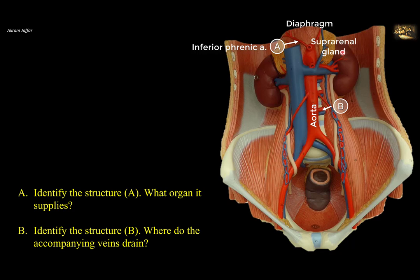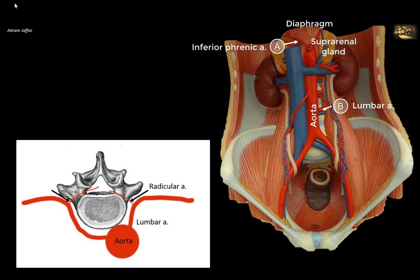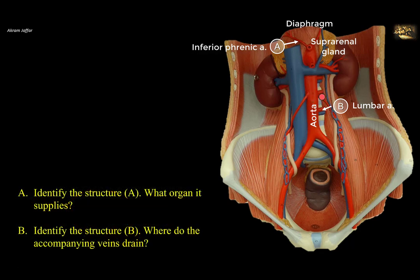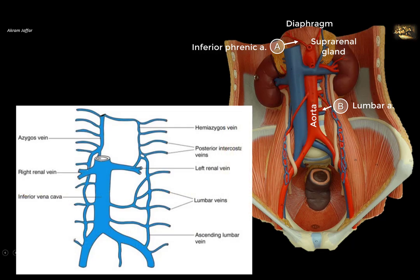Regarding structure B, this is one of the four pairs of lumbar arteries — the first one is higher up and not shown here. In addition to supplying the anterior abdominal wall, these lumbar arteries provide branches that supply the spinal cord, so they are like segmental arteries, in the same sequence as the intercostal and subcostal arteries. The accompanying lumbar veins are tributaries of the inferior vena cava. However, the first and second lumbar veins may empty into the ascending lumbar vein on either side. These ascending lumbar veins connect with the azygos and hemi-azygos veins of the thorax, so if the inferior vena cava becomes blocked, the ascending lumbar veins become important collateral channels between the lower and upper parts of the body.